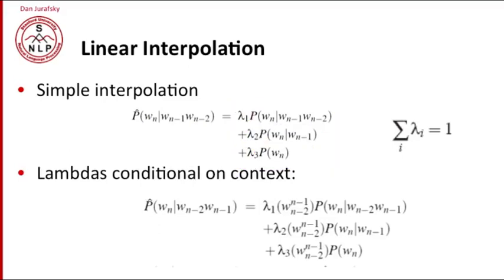We can do something slightly more complicated. We can condition our lambdas on the context. So we can say, still mix our trigram, our bigram, and our unigram, but now the lambdas are dependent on what the previous two words were. So we can train even richer and more complex context conditioning for deciding how to mix our trigrams and our bigrams and our unigrams.